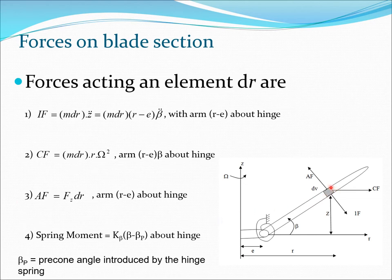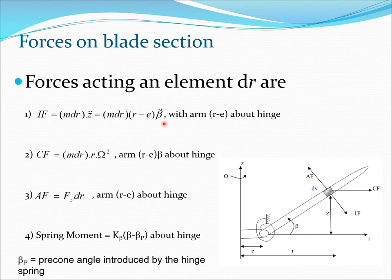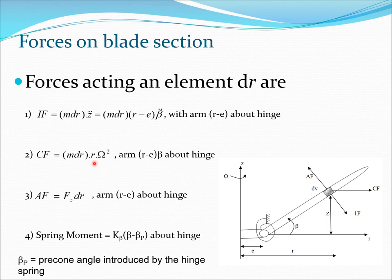Let's look at the forces which act on element dr and derive the equation of motion. The inertia force is mass times z-double-dot, where z-double-dot is (r minus e)·beta-double-dot — recall in the previous problem it was r·beta-double-dot, but now the distance is r minus e. The moment arm is also r minus e. The centrifugal force is m·dr·r·Omega-squared and the moment arm is (r minus e)·beta, using the small-angle assumption.